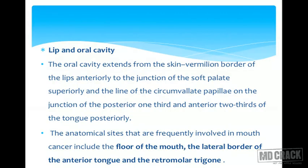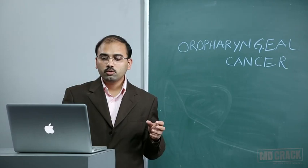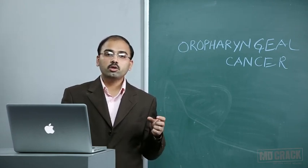Now we will see malignancies arising from lip and oral cavity. Anatomically, the oral cavity extends from the vermilion border of lips anteriorly to the junction of the soft palate superiorly, to the line of circumvallate papillae at the junction of the posterior one-third and anterior two-thirds of the tongue posteriorly. The anatomical sites frequently involved in mouth cancer include the floor of the mouth, lateral border of the anterior tongue, and retromolar trigone.